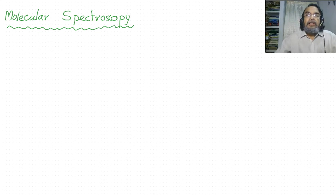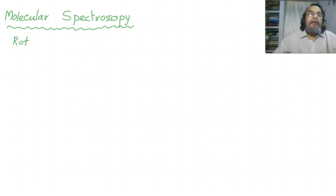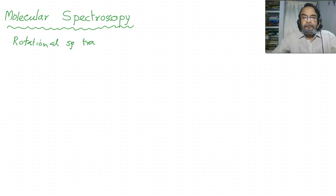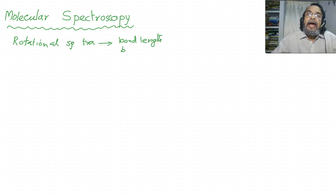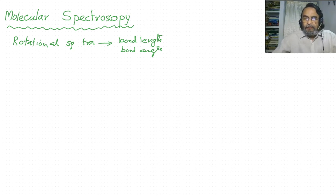Let us see what are the different types of molecular spectroscopy. The first one is called rotational spectra. This rotational spectra gives valuable information about the bond length — that is the inter-nuclear distance in atoms — bond angle and moment of inertia. Exact evaluation is possible with the rotational spectra.